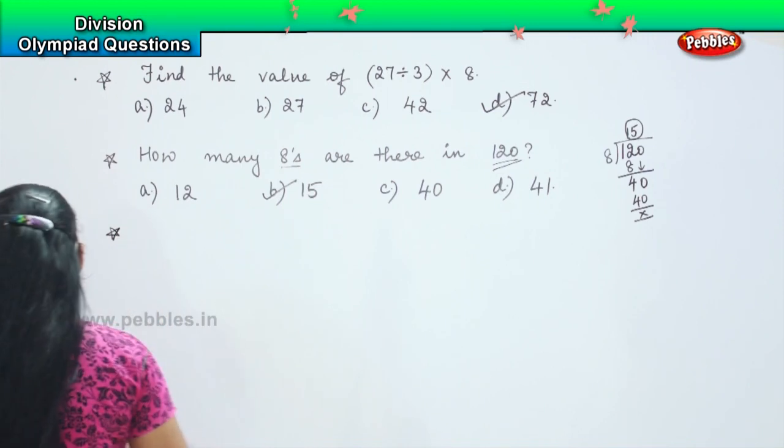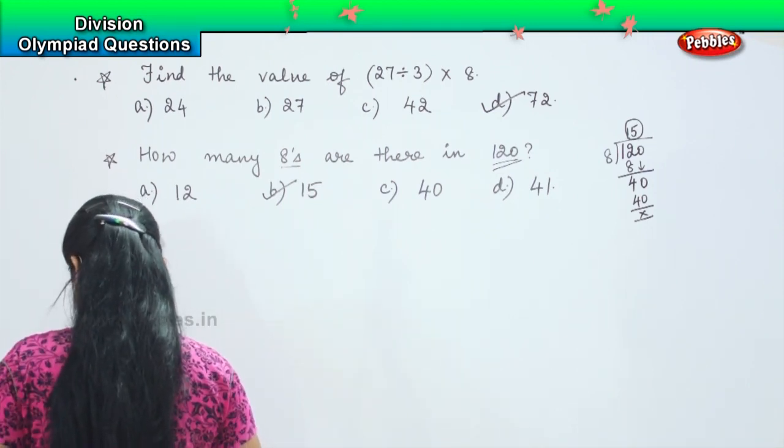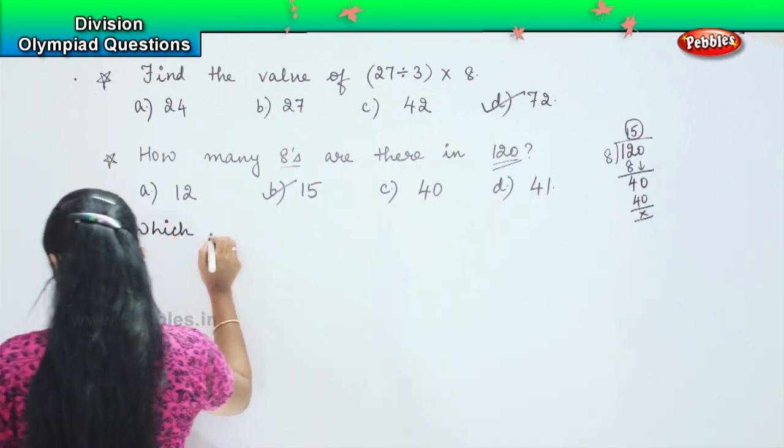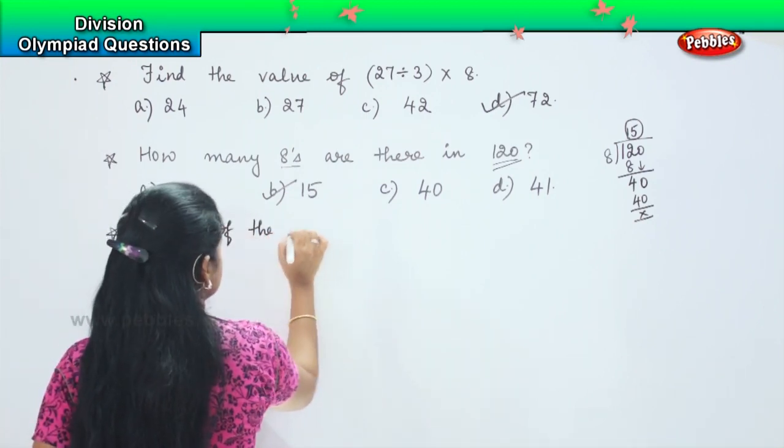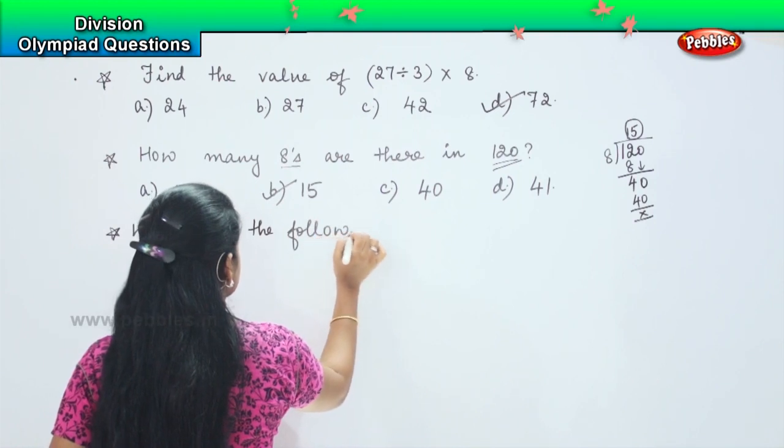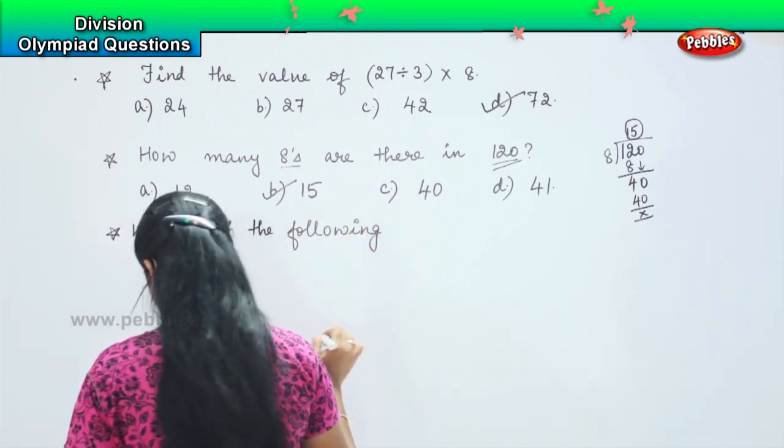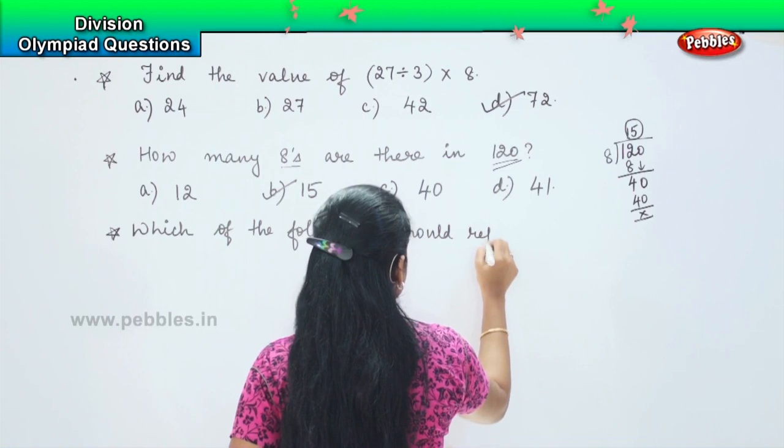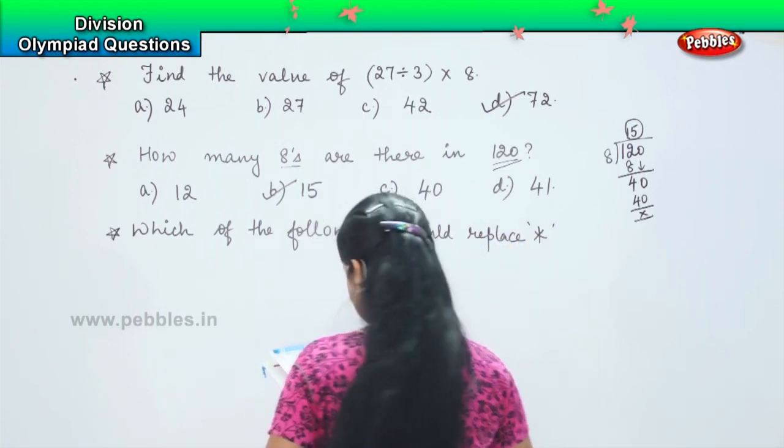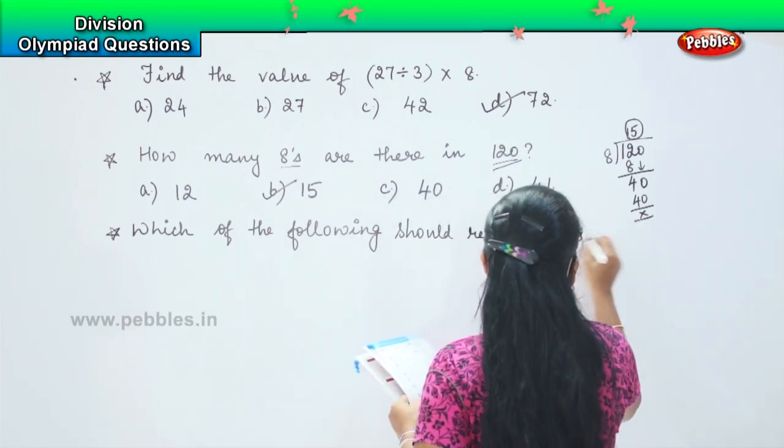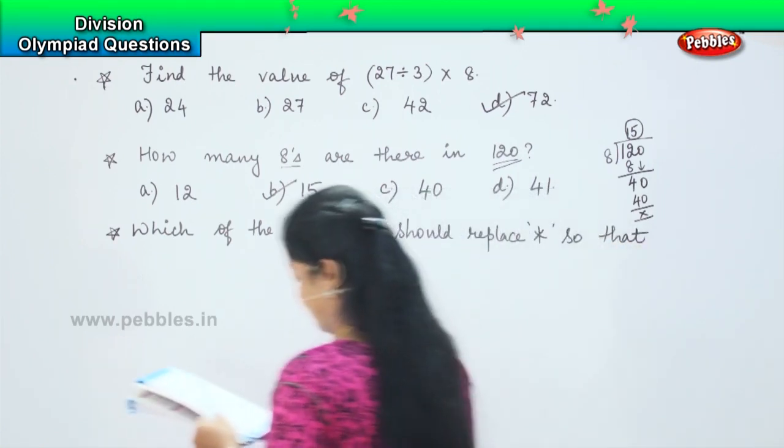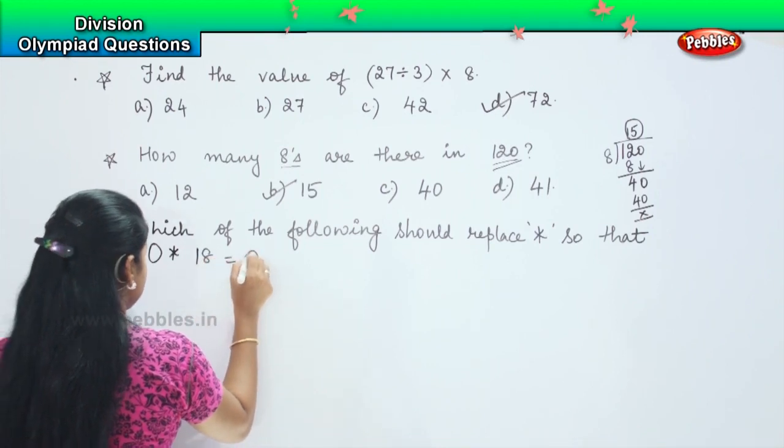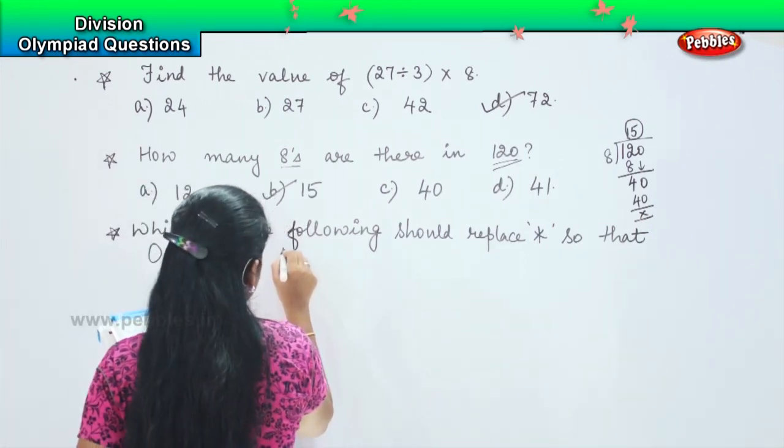Here is your next question. The next question says which of the following should replace hashtag so that 0 asterisk 18 is equals to 0 is correct.